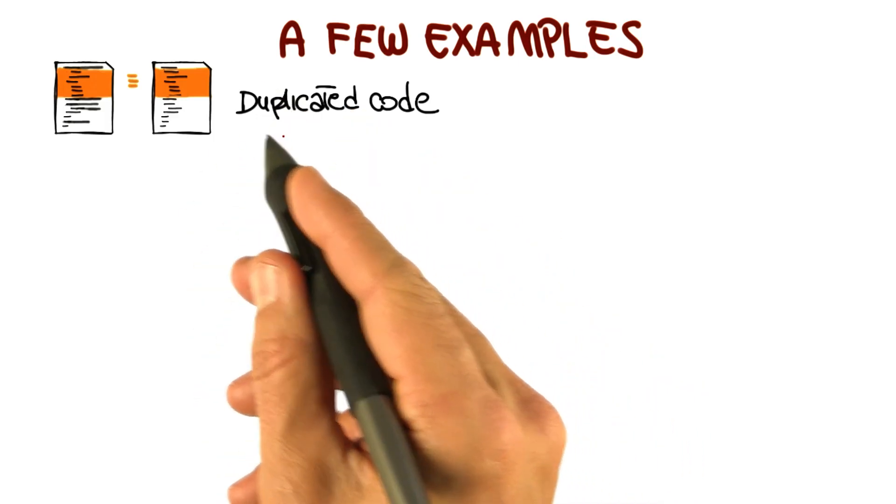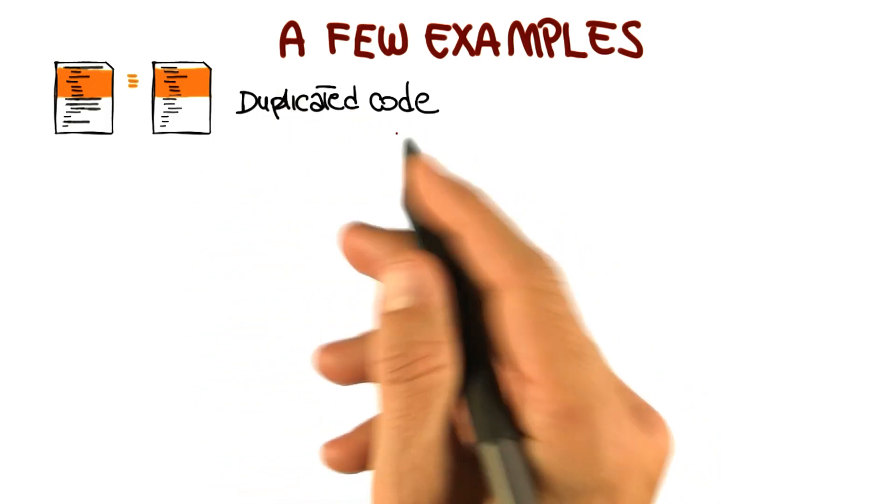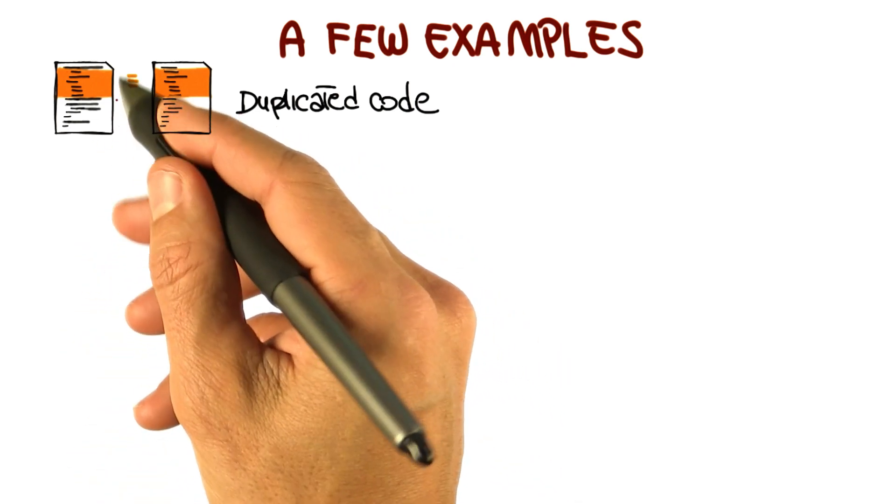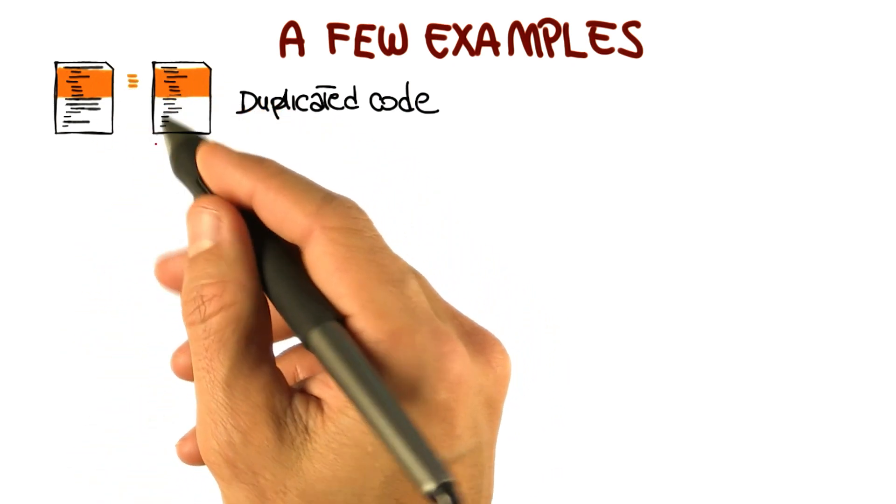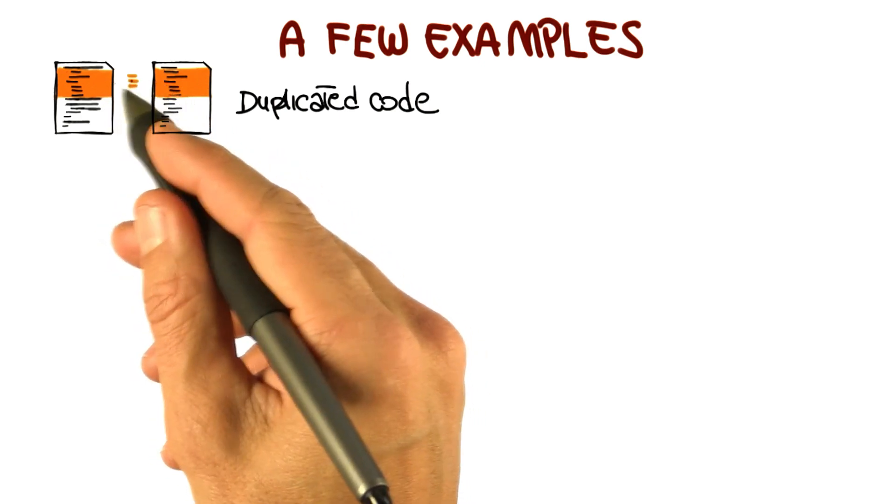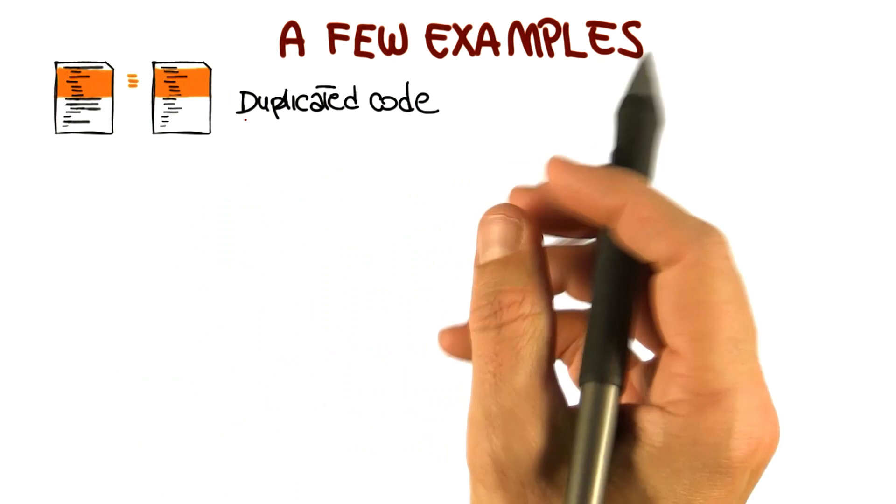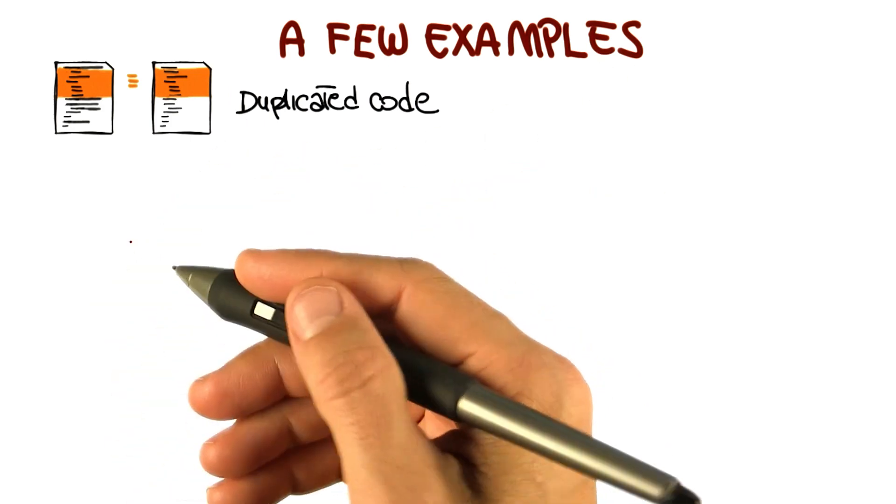The first example I want to mention is the smell called duplicated code. The symptom is that you have the same piece of code, the same fragment of code or code structure, replicated in more than one place. And that's pretty common when we do, for example, copy and paste programming, something that we mentioned at the beginning of the lesson.